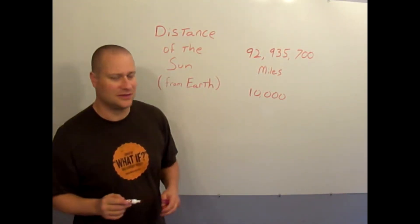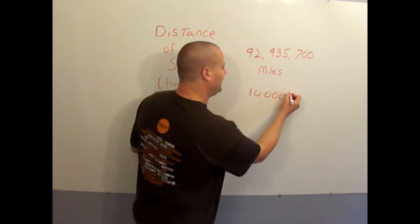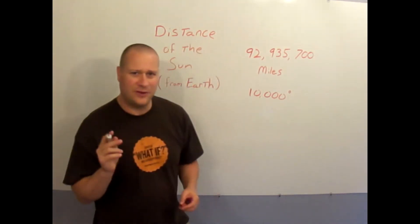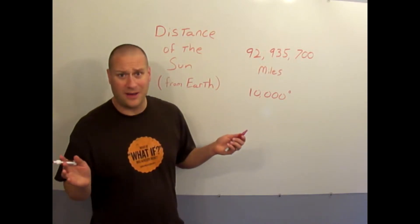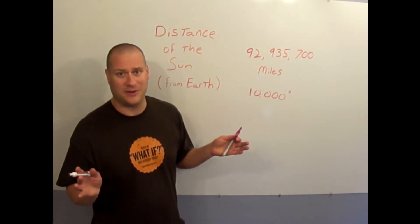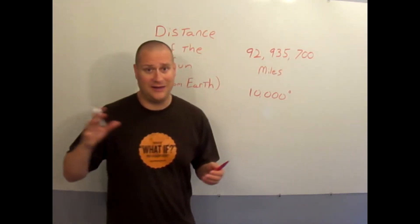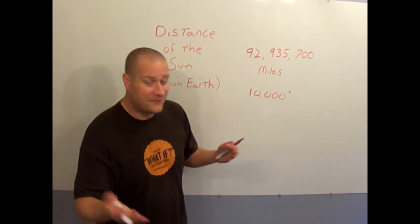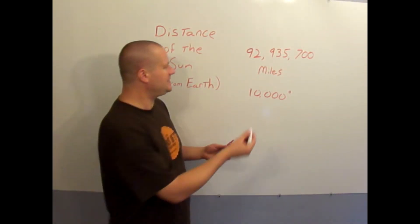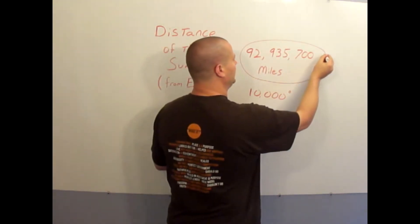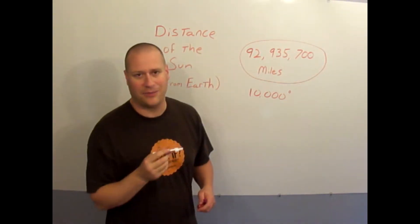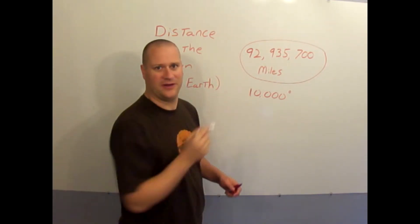If we were really any closer we'd burn up and our planet would be inhospitable. And if we were any farther our planet would freeze. This number, even though it's so huge we can't comprehend it, what we can comprehend is that it's perfect.